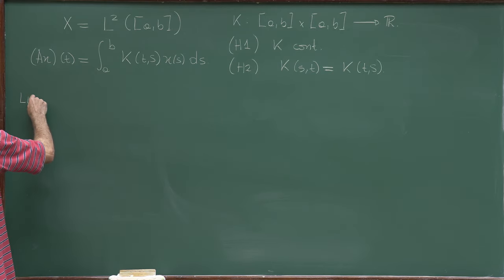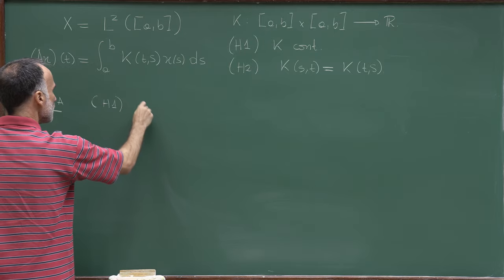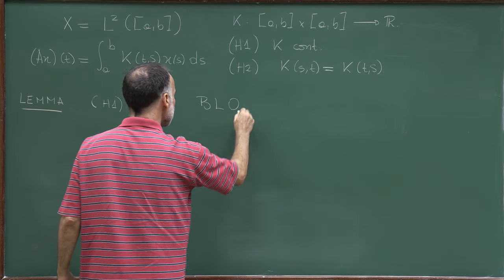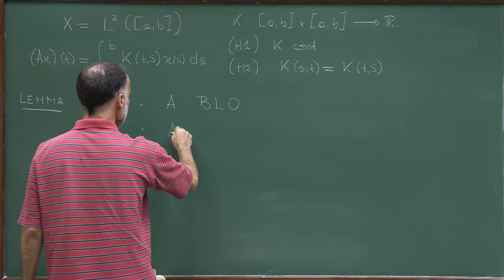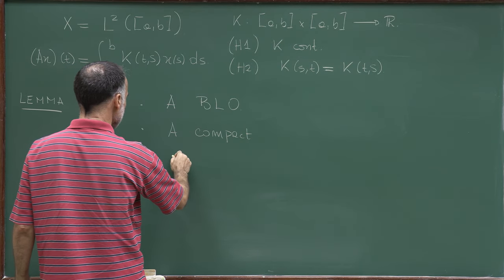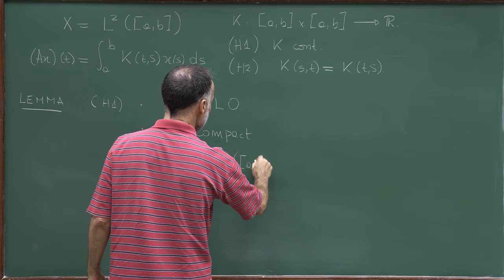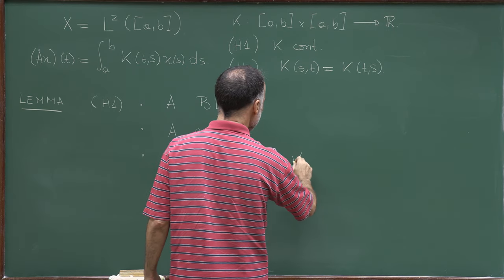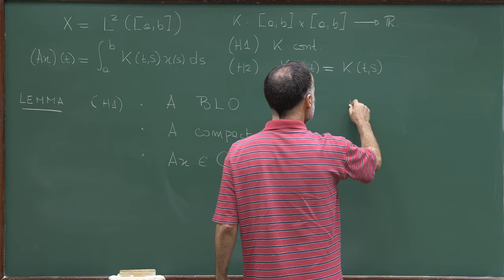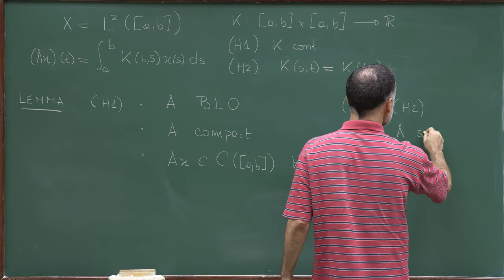The lemma states: assuming H1, A is a well-defined bounded linear operator, and A is compact. Moreover, Ax is a continuous function in C(a,b) for all x in X. If we also assume H2, then A is a symmetric operator.